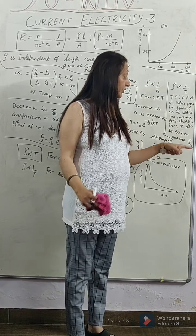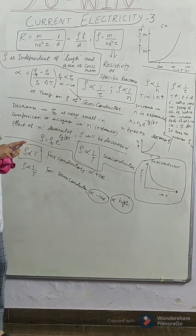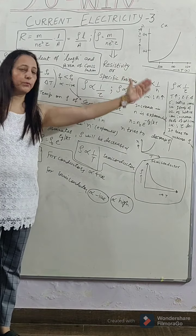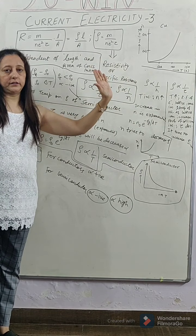But, in case of semiconductor, relaxation time factor remains. Amplitude of oscillation will increase, relaxation time will decrease, all this remains the same. But, number density increases so much that it dominates this factor.